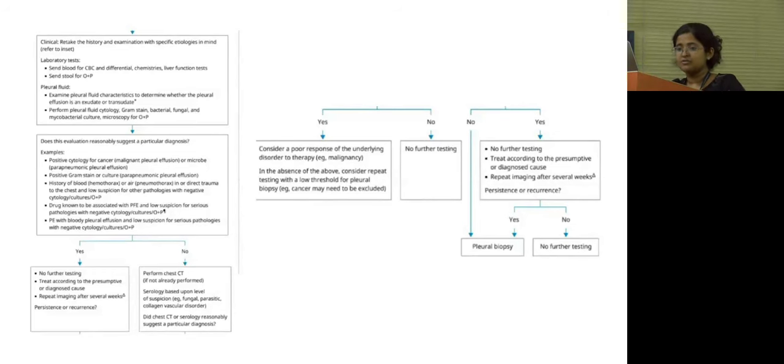Then, based on this evaluation, we can follow up the patient, saying if it is positive cytology for cancer, positive gram stain or culture indicating parapneumonic pleural effusion, history of blood or air, or direct trauma to the chest, or drug known to be associated with pleural fluid eosinophilia. If any of these are found to be positive, no further testing is needed and can be treated based on the clinical history and examination that we have found. If none of these have been noted to be positive, then a chest CT can be performed and serology can be based on the level of suspicion.